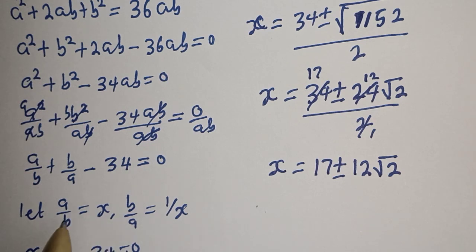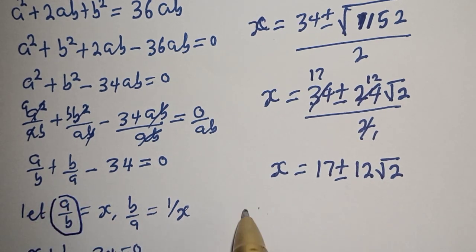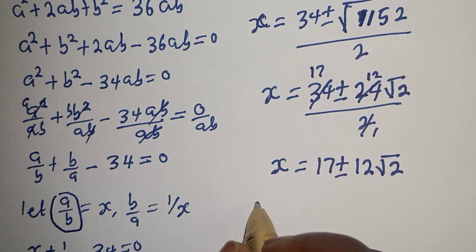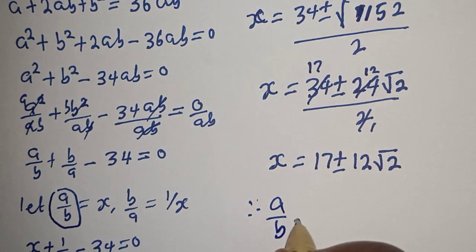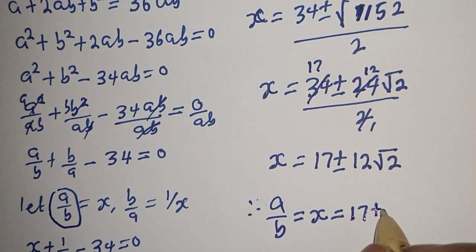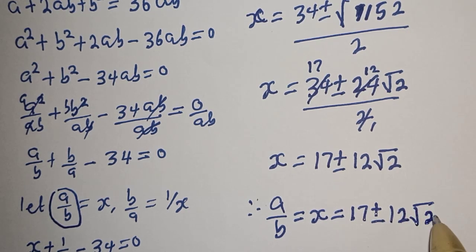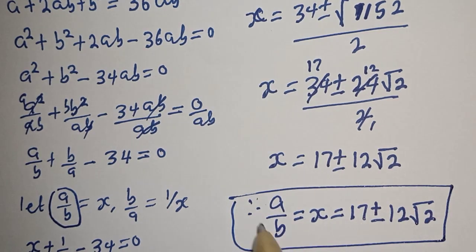But from here, we said let A over B equal S, and the question asks us to find the value of A over B, which is S. Therefore, A over B equals 17 plus or minus 12 root 2. And this is the final answer.